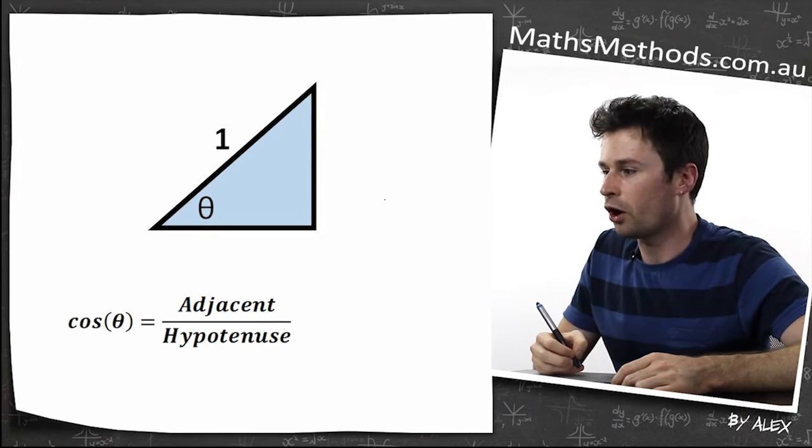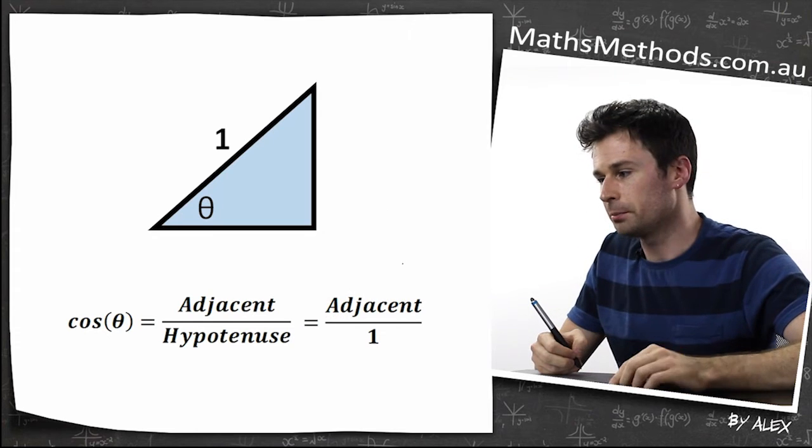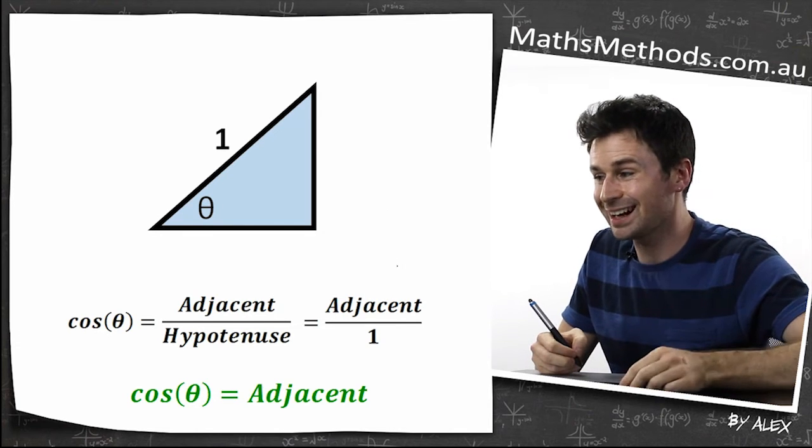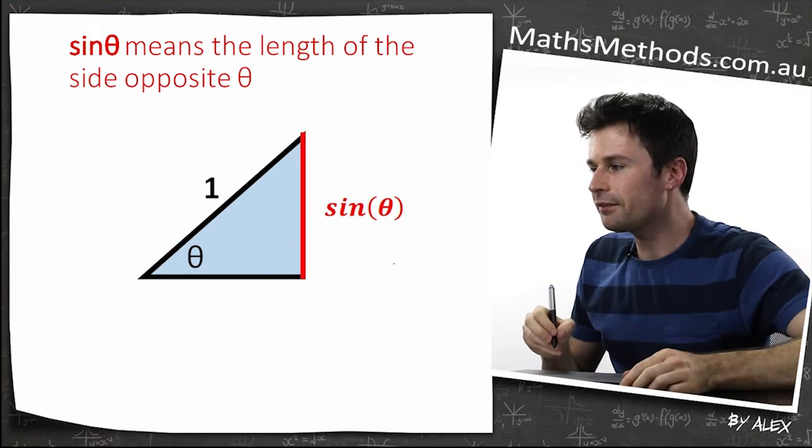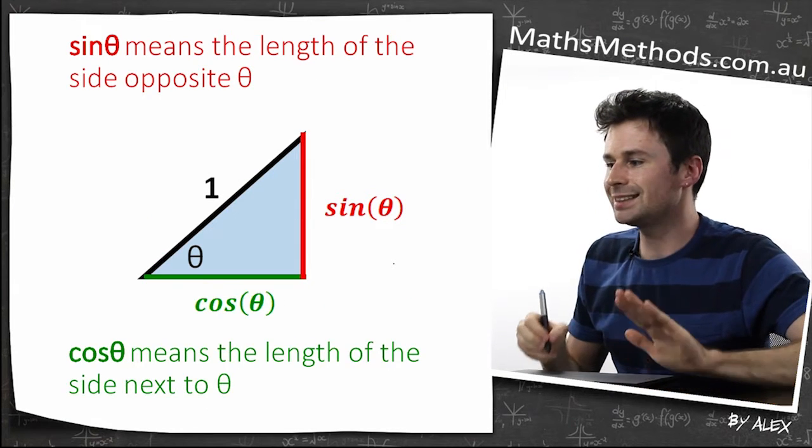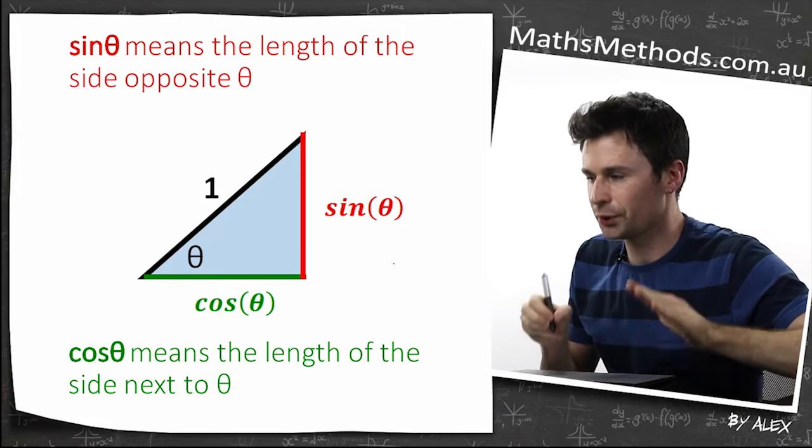Cosine equals adjacent over hypotenuse, which equals adjacent divided by one. So cos theta equals the length of the adjacent side. So in summary, sine means the length of the opposite side, and cosine means the length of the side next to theta.